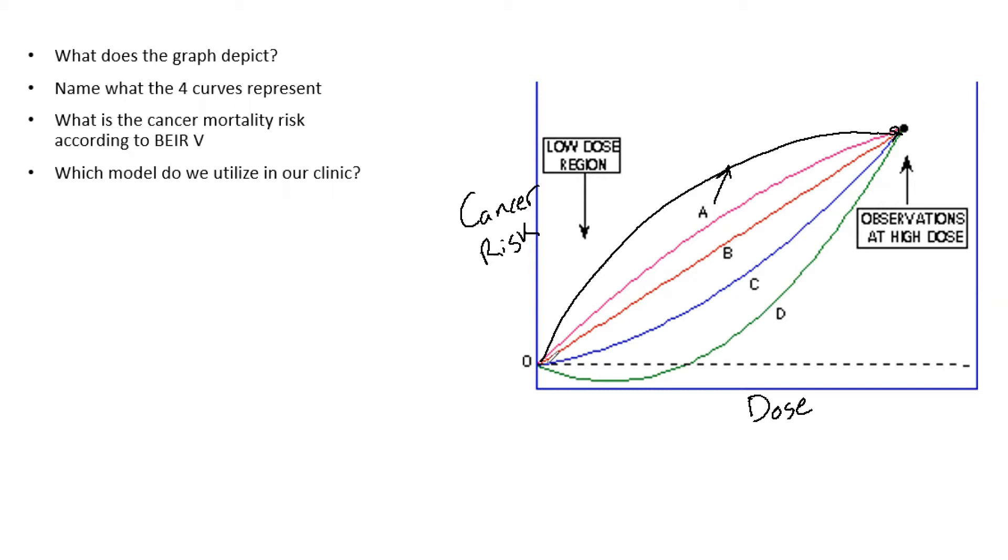If we look at B, this is just a single straight positively sloped line. This is the linear no threshold model. This is the assumed model and it says that every radiation exposure, regardless of how small, does have some risk associated to it. It's not as conservative as the hypersensitivity model, but it's kind of the average of all the other models. It is the one that we base our clinics off of, and it also is the basis for ALARA.